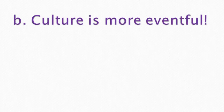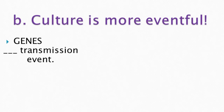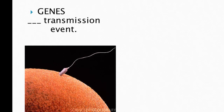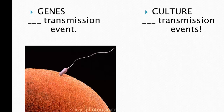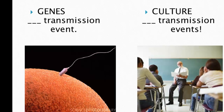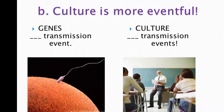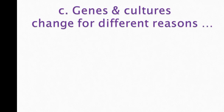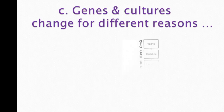Another idea is that culture is more eventful. In genetic transmission, there's one transmission event — when the egg meets the sperm. In cultural transmission, there's a multitude of transmission events: every time you go to class, watch a television show, listen to a song, visit a friend, or send a text message. It's hard to pinpoint exactly what a transmission event is in culture as precisely as with genes, but cultural transmission can be relatively continuous.